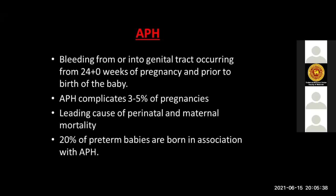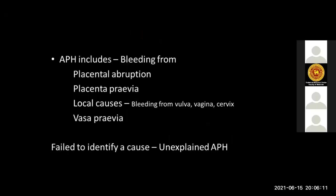Antepartum hemorrhage is bleeding from or into the genital tract occurring from 24 weeks of pregnancy and prior to the birth of the baby. It complicates about 3 to 5% of pregnancies and is one of the main causes of perinatal and maternal mortality. About 20% of preterm babies are born in association with antepartum hemorrhage. This includes bleeding from placental abruption, placenta previa, local causes such as vulval, vaginal, or cervical lesions, vasa previa, and unexplained cases.